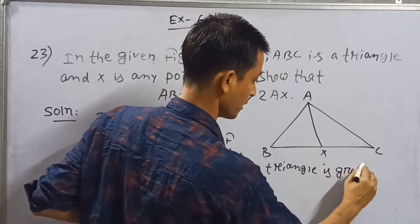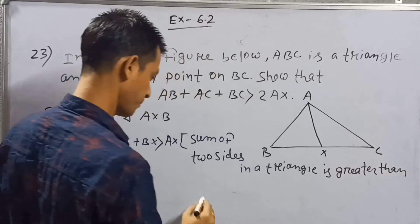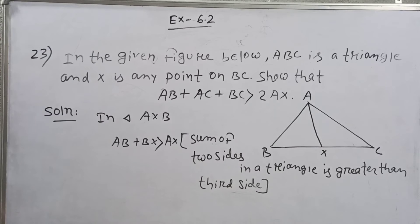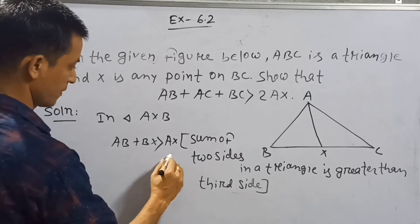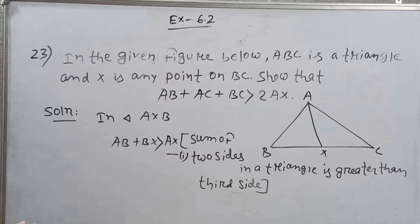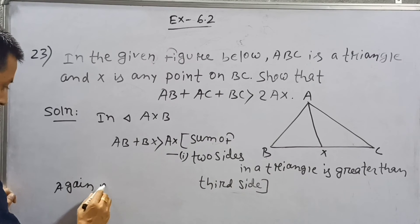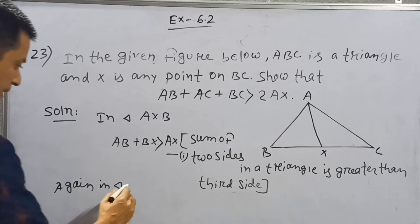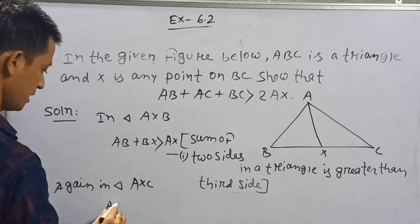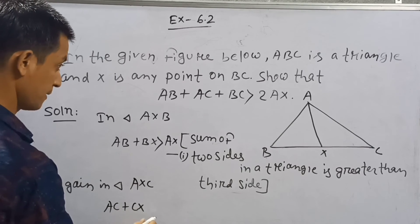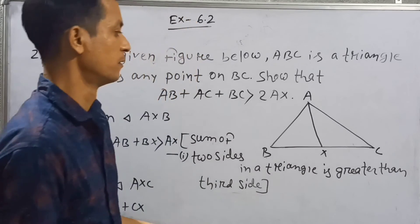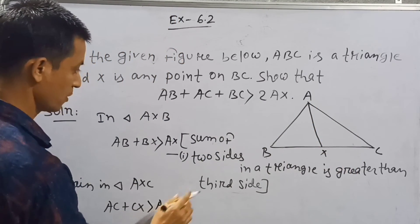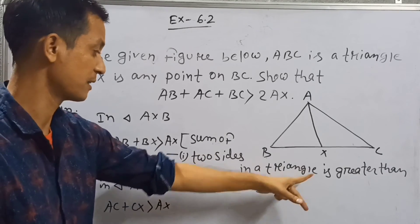In triangle AXB, AB plus BX is greater than AX, since the sum of two sides of a triangle is greater than the third side. This is equation one. Similarly, in triangle AXC, AC plus CX is greater than AX. This is equation two.